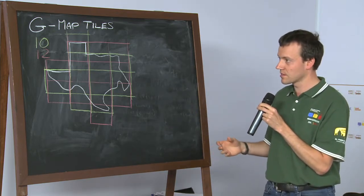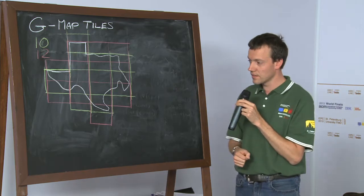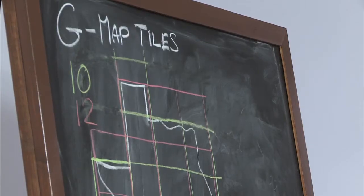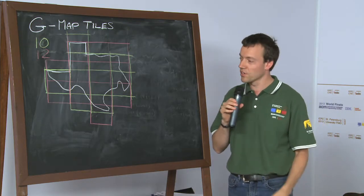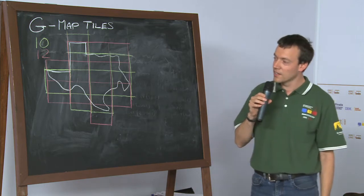And actually, in this case, it turns out that 10 is the optimal solution for the amount of tiles you need. Okay, so that's kind of intuitively the problem statement. Now, this country is given as a polygon. So you get a polygon kind of describing the boundary of the country. And then you are asked to output the optimal tiling, the optimal number of tiles.